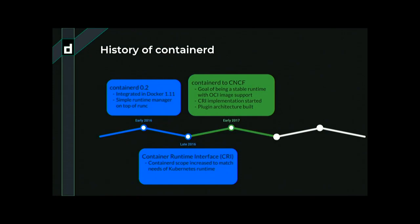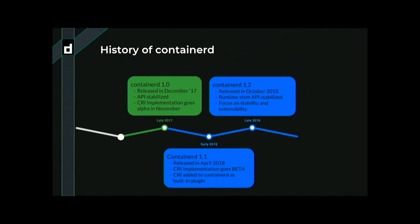Starting from last FOSDEM: we had just done 1.0 late 2017, so last year at FOSDEM we were a few months into that. Then a few months after FOSDEM we released our 1.1 release. That's around the time that the CRI implementation — the plugin that implements the Kubernetes CRI interface — was a separate project. I mentioned in the containers dev room last year that the CRI project was going to merge into our same GitHub repo. That did happen, and now the CRI and Containerd core itself are developed by the same group of people. The maintainers for the CRI plugin are also maintainers in Containerd and vice versa.